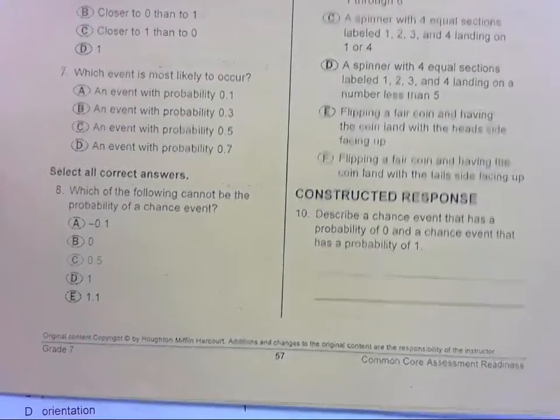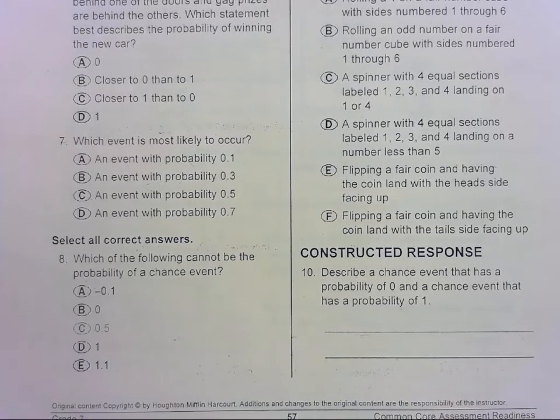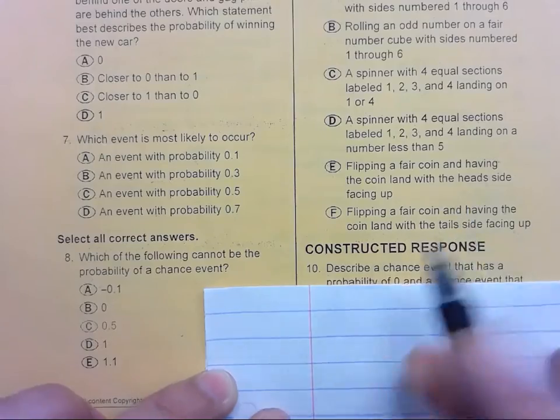7SP5. Let's look at number 8. Which of the following cannot be the probability of a chance event? So which of these is not possible? And we're selecting all, so there's a good chance there's more than one answer.